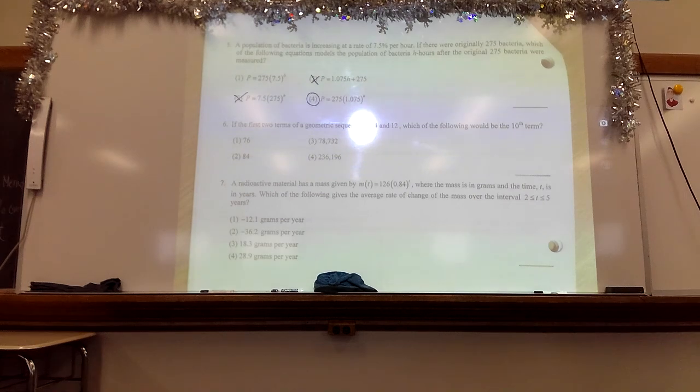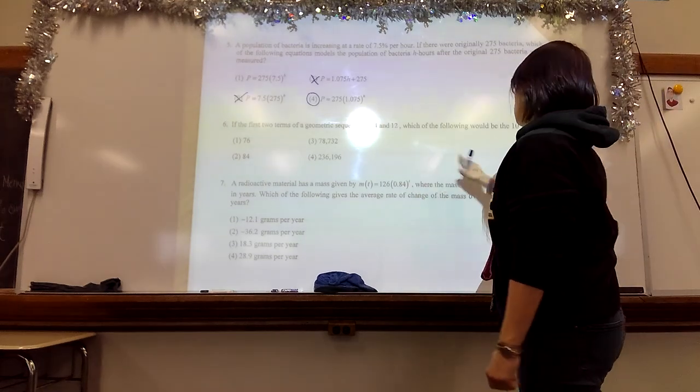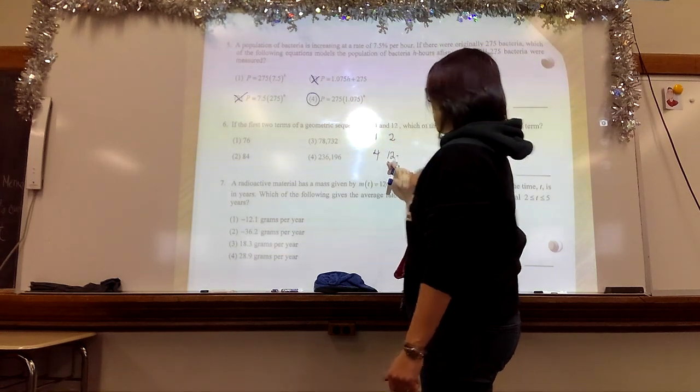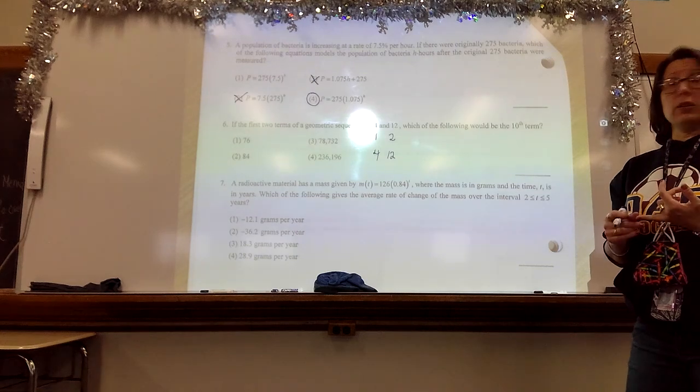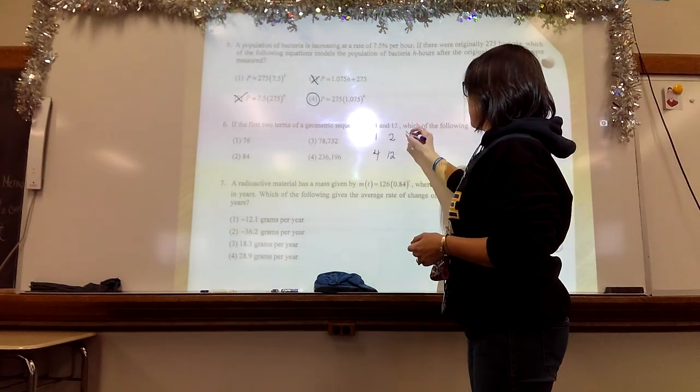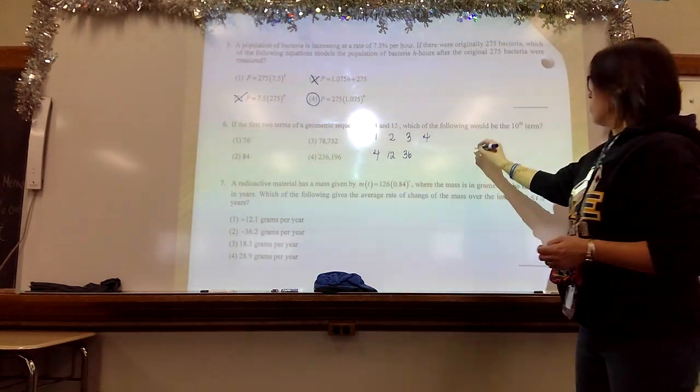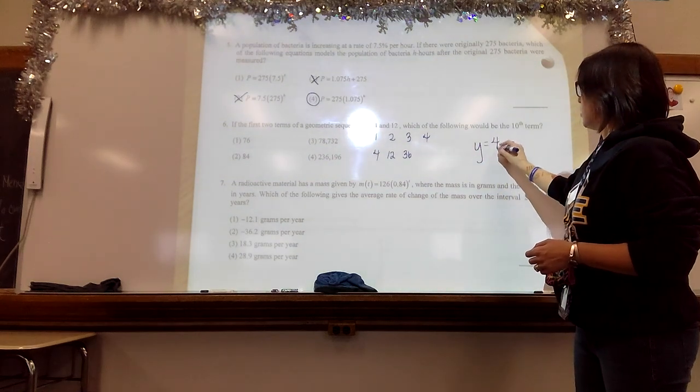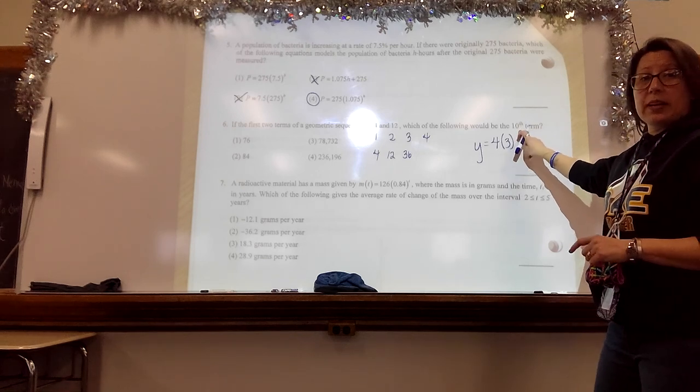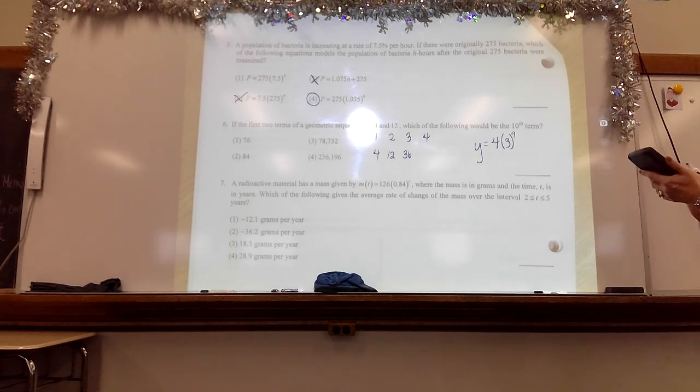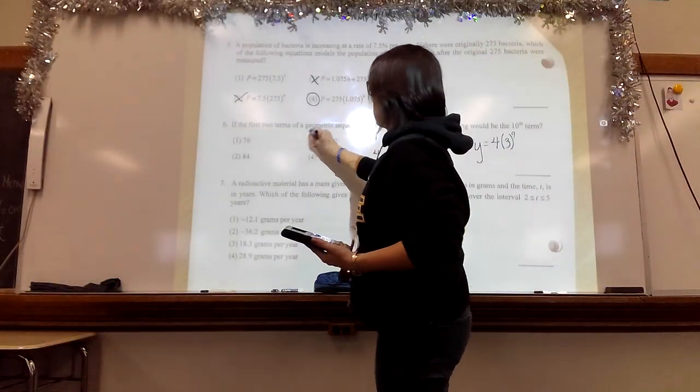If the first two terms of a geometric sequence are four and twelve, which of the following would be the tenth term? So you can do this a couple of different ways. You can just list it out if you want to. The first term is four. The second term is twelve. What's happening? Geometric sequences, remember, is multiplying. So we're multiplying by three. So the third one would be 36, and on and on. Or, you can use the formula, which is the starting amount times the growth factor. If I want the tenth term, then I have to do that nine times. Put that into my calculator: four times three to the ninth power. And my answer is choice three.